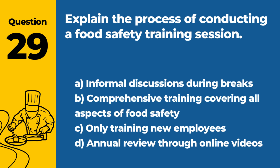Question 29: Explain the process of conducting a food safety training session. a. Informal discussions during breaks. b. Comprehensive training covering all aspects of food safety. c. Only training new employees. d. Annual review through online videos. Answer: b. Conducting a food safety training session involves providing comprehensive training that covers all aspects of food safety, ensuring that staff are knowledgeable and can apply these practices in their daily work.